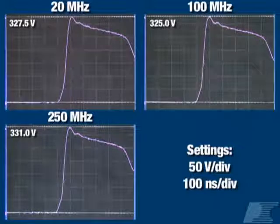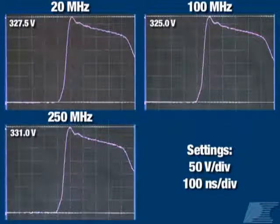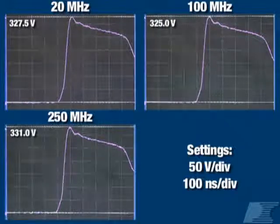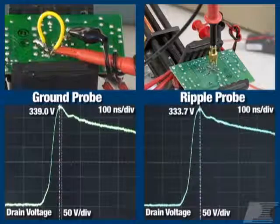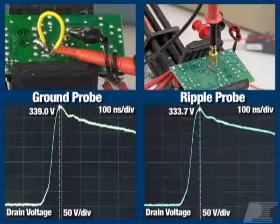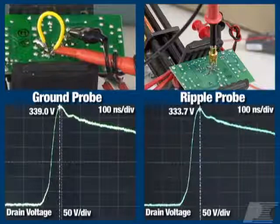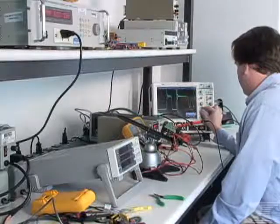A high scope bandwidth is especially important when measuring peak drain voltage to ensure accurate measurements. For example, here are three peak voltage measurements made with a bandwidth of 20 megahertz, 100 megahertz, and 250 megahertz. We can see that the difference in peak voltage between the 20 megahertz and the 250 megahertz measurement is more than 3 volts. For critical measurements of drain voltage where the absolute value of peak voltages is important, best results are achieved by replacing the scope tip with a ripple probe. This minimizes the loop area of the probe ground and reduces noise pickup. As seen here, using a ripple probe will typically result in a lower peak measurement by 5 to 10 volts. Now you're ready to measure drain voltage.